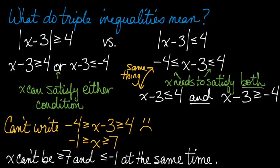So the triple inequality always means and. There is no shortcut for an or statement, so we just have to write the word or. No big deal.